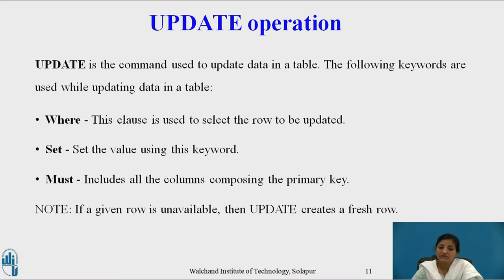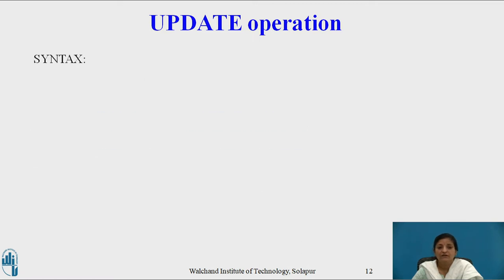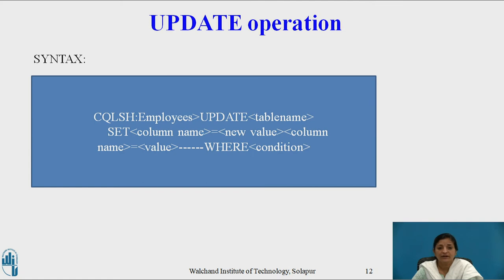Note: if a given row to be updated is unavailable in the table, the UPDATE command creates a fresh row. The syntax is: UPDATE table_name SET column_name = new_value WHERE condition, which specifies only those rows for which the update needs to be done.